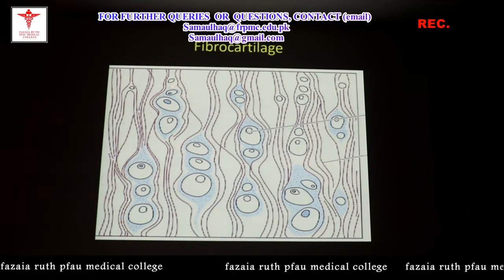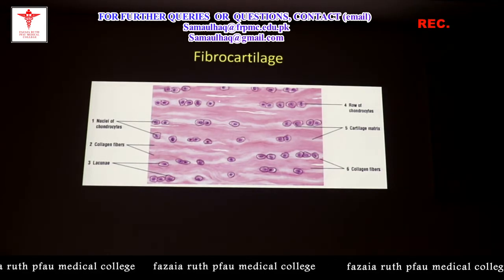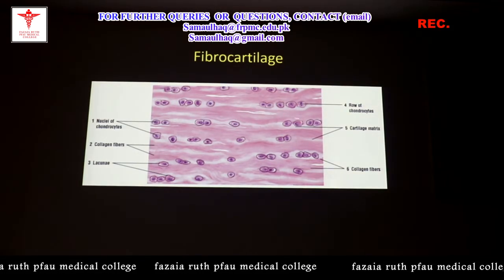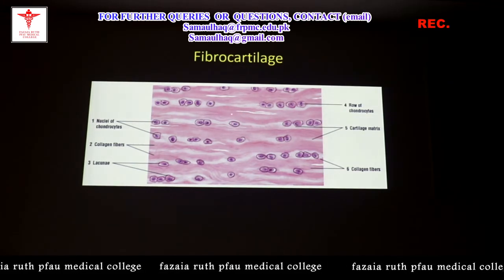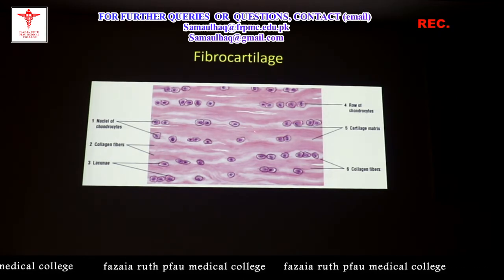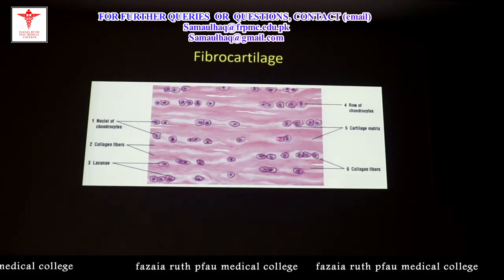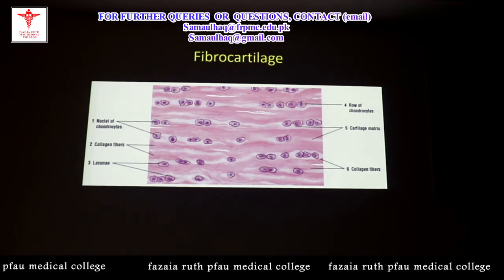In fibrocartilage, rows of chondrocytes are parallelly arranged, with collagen fibers intermingled between them — a key differentiating point from hyaline and elastic. The rows can contain single cells or isogenous groups, but they are always arranged in rows, with ground substance and collagen fibers in between. The direction of collagen fibers is toward the functional stress areas. Lacunae spaces are present, and the collagen fibers are type 1.